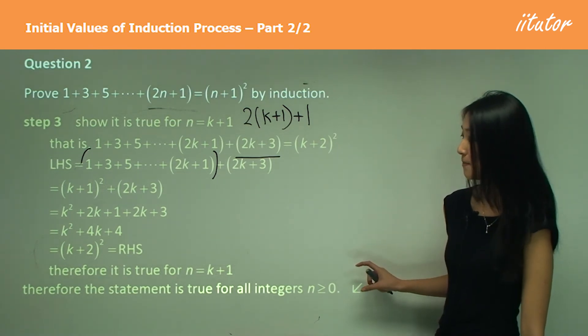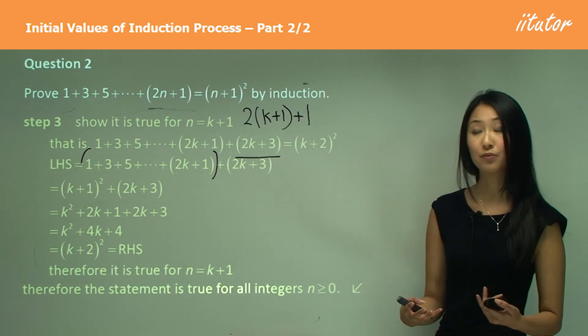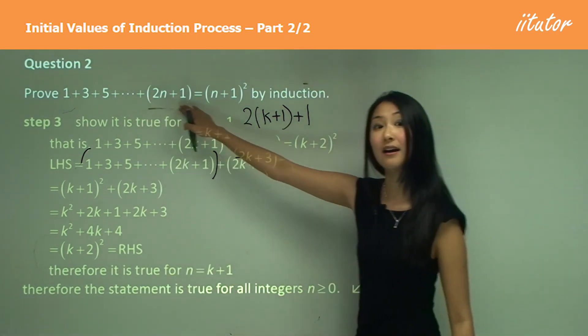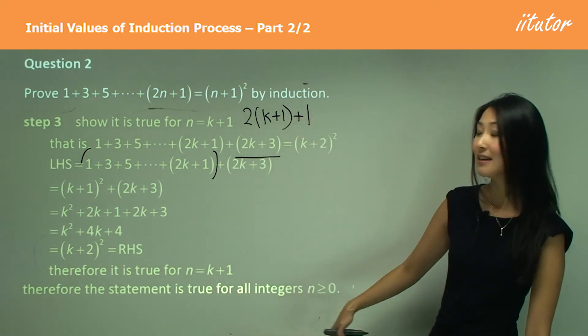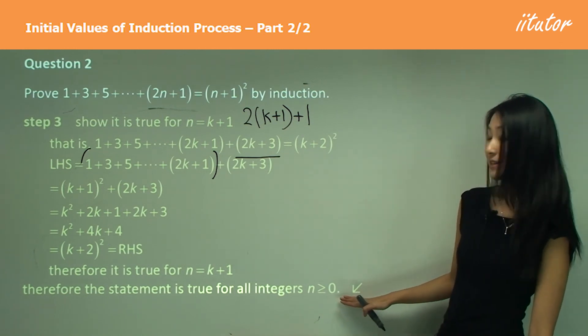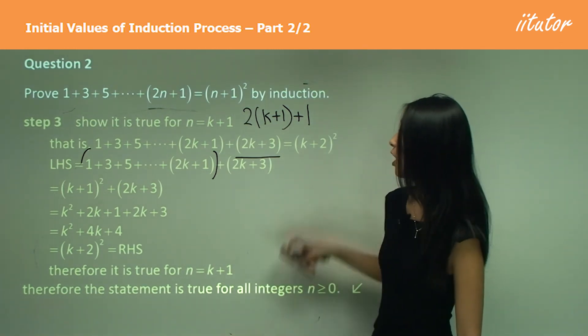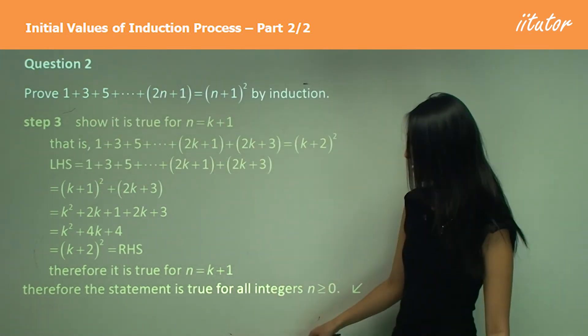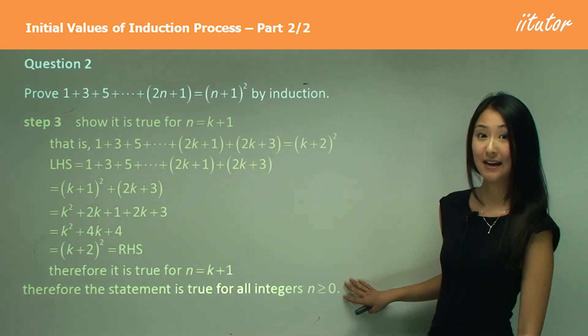Just for the purpose of space, we've written therefore the statement is, but the best thing to write is therefore, this entire equation, what you have in the question, rewrite that is true for all integers and is greater or equal to zero. And so you just copy the question into the concluding sentence. And always remember to check that you have the right n value here.